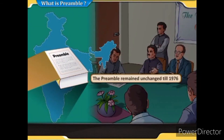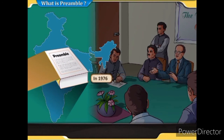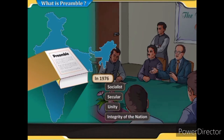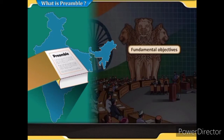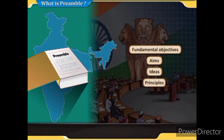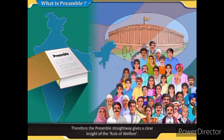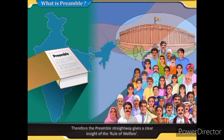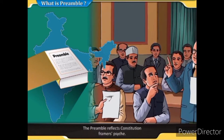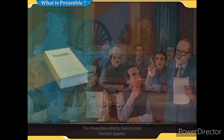The preamble remained unchanged till 1976. In 1976, the words 'socialist', 'secular', and 'unity and integrity of the nation' were added. The preamble verbalizes the fundamental objectives of the Constitution — its aims, ideas, and principles — and straightaway gives a clear insight into the rule of welfare. The preamble reflects the Constitution framers' psyche.